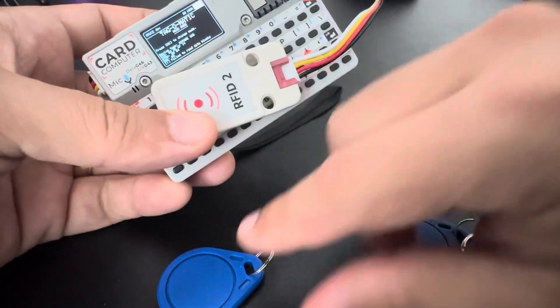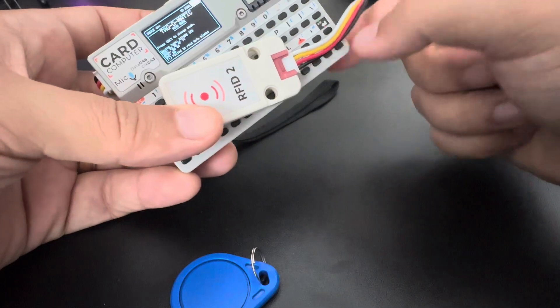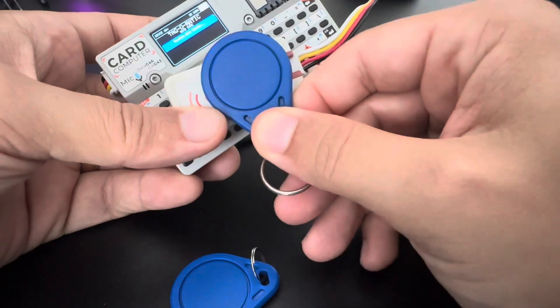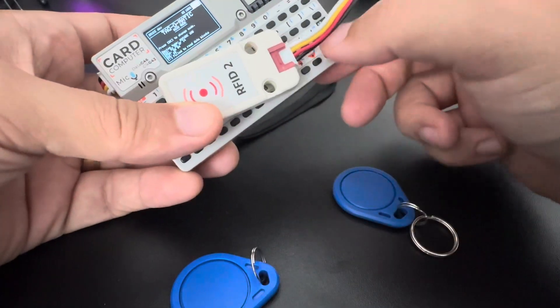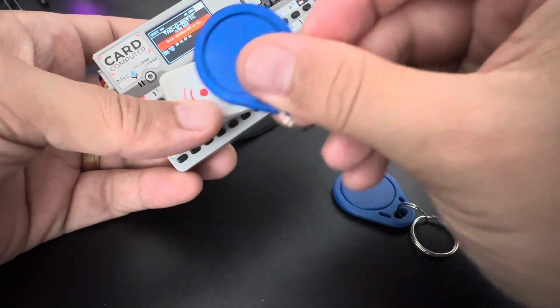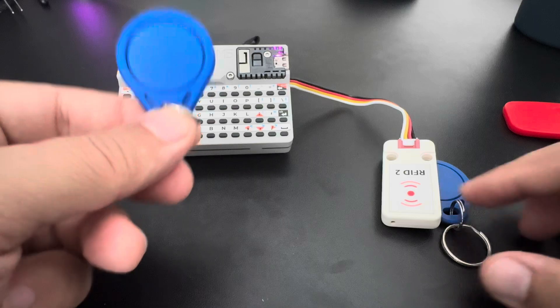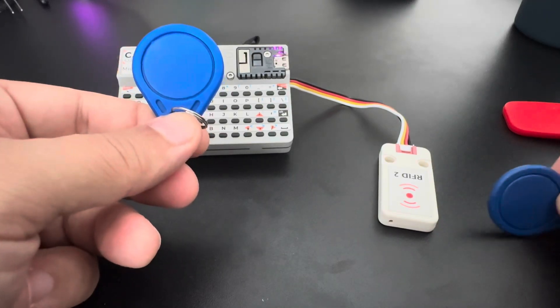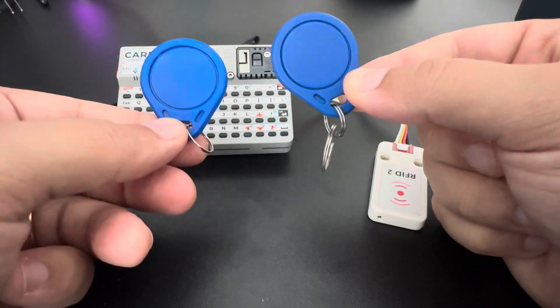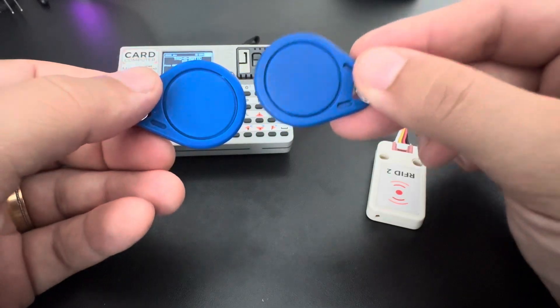Let me put it next here. So read this one and write into this one, success. But read this one and write into this one, failure. So this is blocked, the block zero is blocked, but this one is okay. So the same shape, the same kind of tag, but what really matters is the component inside.